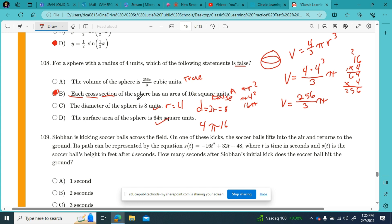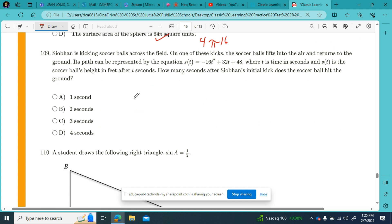Okay, moving forward, number 109. Siobhan is kicking soccer balls across the field. On one of these kicks, the soccer ball lifts into the air and returns to the ground. Its path can be represented by the equation s(t) equals negative 16t squared plus 32t plus 48, where t is the time in seconds and s(t) is the soccer ball's height in feet after t seconds. How many seconds after Siobhan's initial kick does the soccer ball hit the ground?